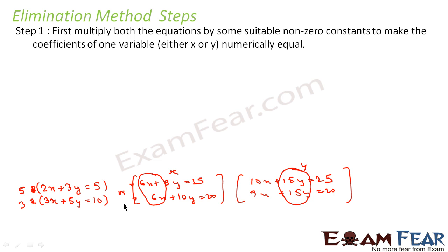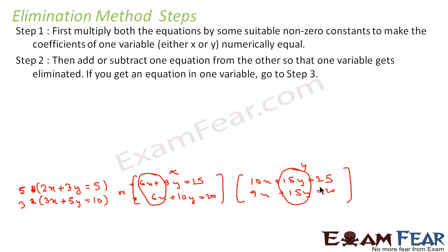We just have to multiply by a suitable number to make the x part the same or the y part the same. This is step one. Once step one is done, we then add or subtract one equation from another so that one variable gets eliminated.